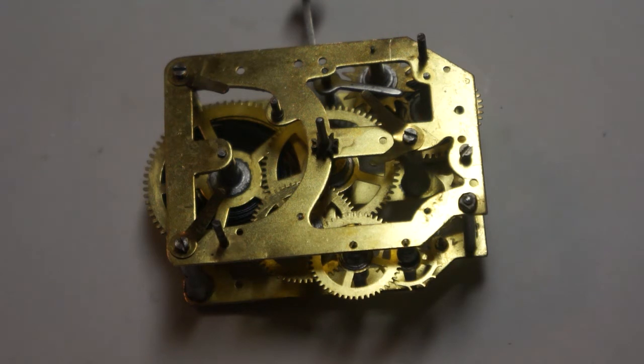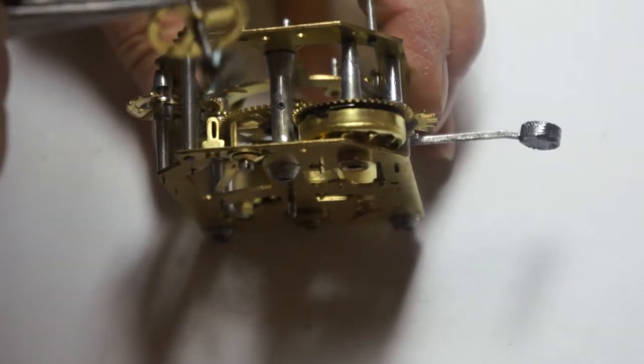Sometime in the 1900s they started producing the Big Ben Clock. The Western Clock Manufacturing Company shortened their name to West Clocks.